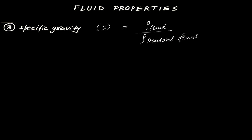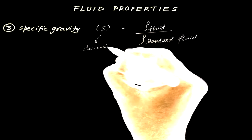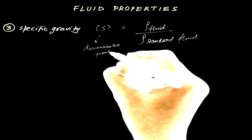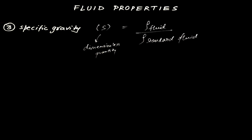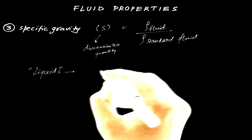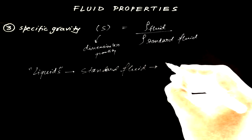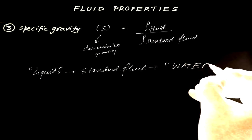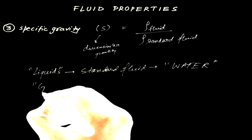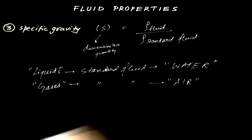Since it is density divided by density, there will be no units — in other words, this is a dimensionless quantity. In case of liquids, the standard fluid is taken as water, and in case of gases, the standard fluid is taken as air.